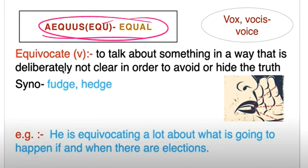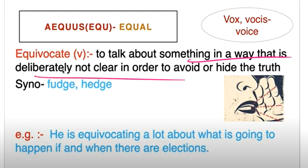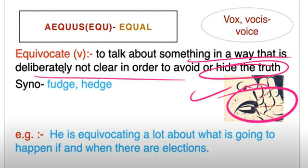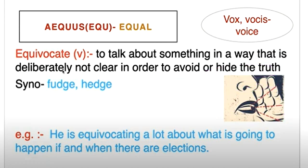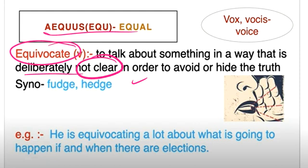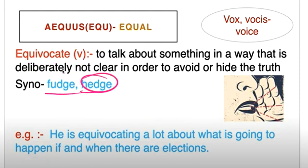The root word aequus means equal, vox means voice. So equivocate means to talk about something in a way that is deliberately not clear to avoid or hide the truth. To try to avoid the truth deliberately, don't talk in a clear way. Equivocate - this means not clear word. Synonyms: fudge or hedge.